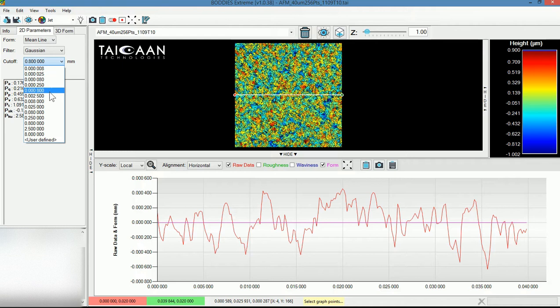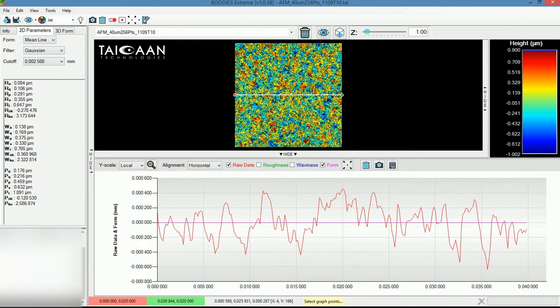Now with a 40 micron measurement area I'm going to choose values below 40 microns. Here you can see I have highlighted a cutoff for the filter of 2.5 microns, so let's click that.